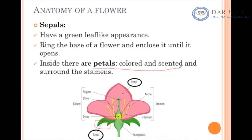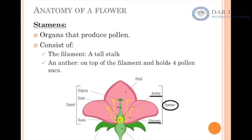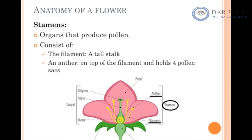When the flower opens, you can see the petals. Petals are the colored and scented part of the flower — the part that has the smell and the color. The petals surround two important structures: the stamen and the carpel.